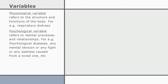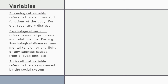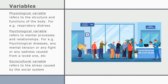The psychological variable refers to mental processes and relationships. Some people have psychological diseases causing stress, or the stress may be due to mental tension, arguments, or sadness from a loved one. The socio-cultural variable refers to the social system within which we live. A well-known example is the mediclaim process in hospitals — submitting papers, waiting for approval, going to different counters, standing in long queues — all causing stress with no choice, as it is part of our social structure.